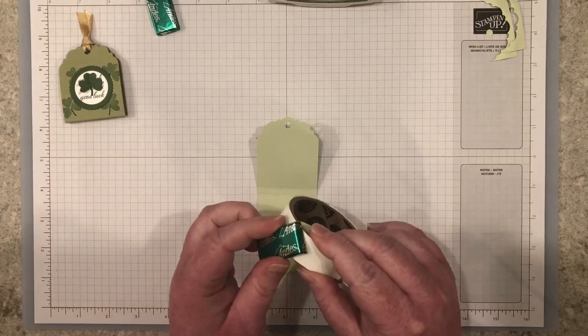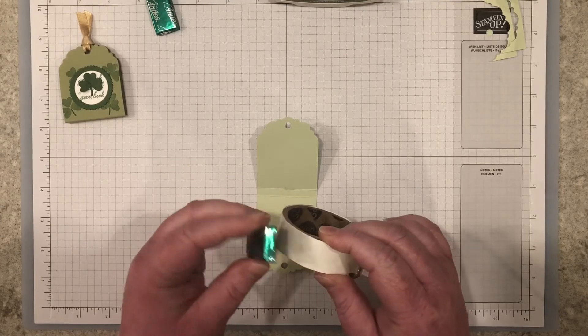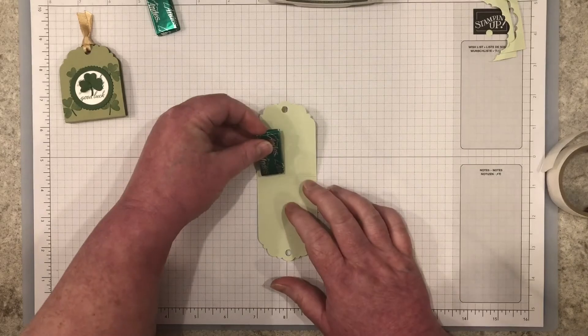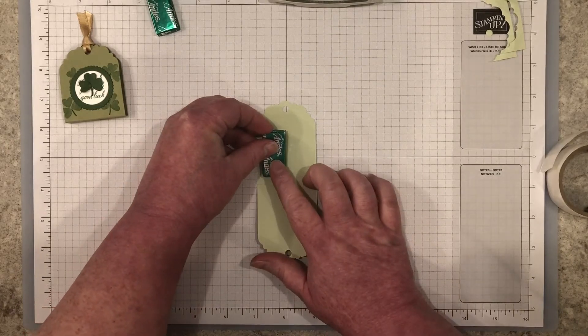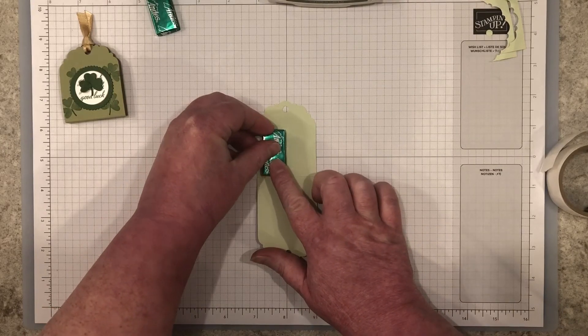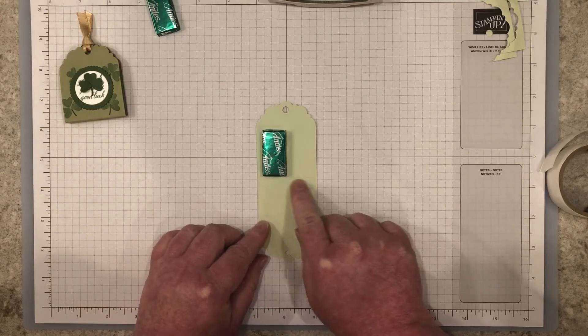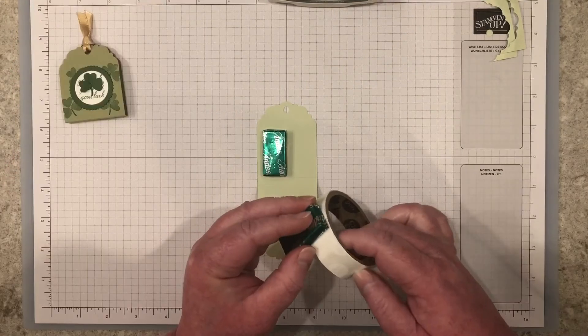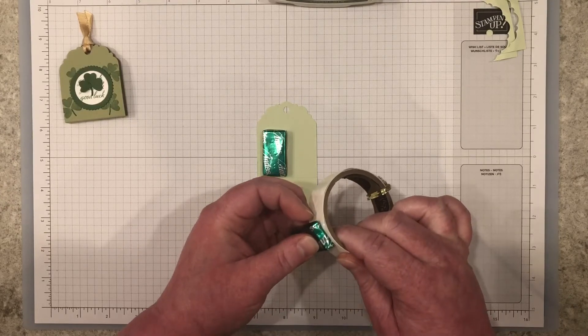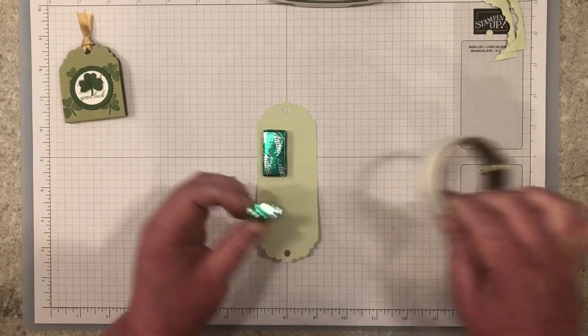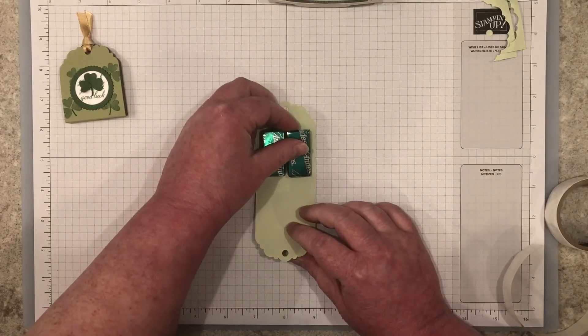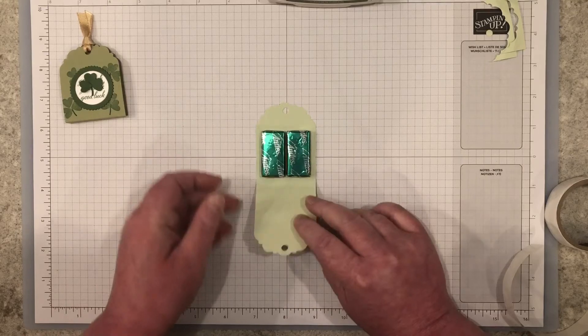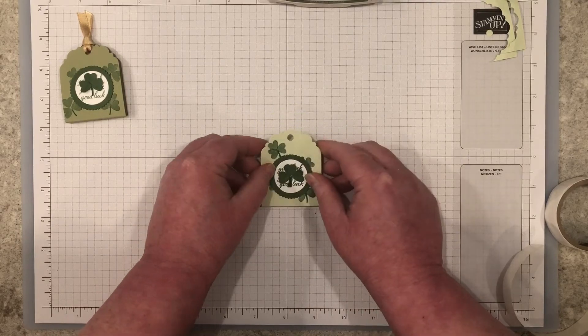Adhere the chocolate candy pieces to the back of the treat holder using glue dots. Place one chocolate candy piece just above the score line on the back of the treat holder. Then add another glue dot to the second piece and place it in the treat holder base. Close up your treat holder.